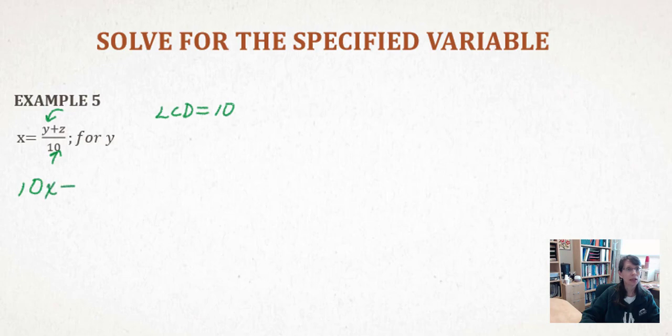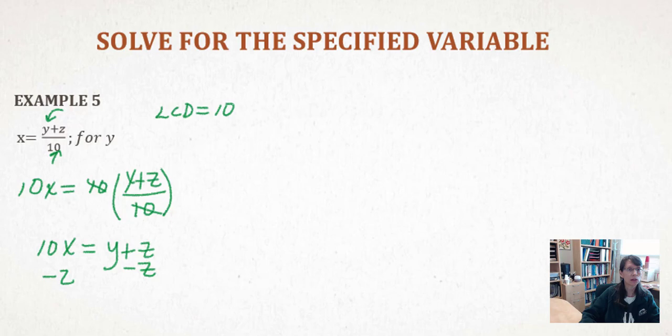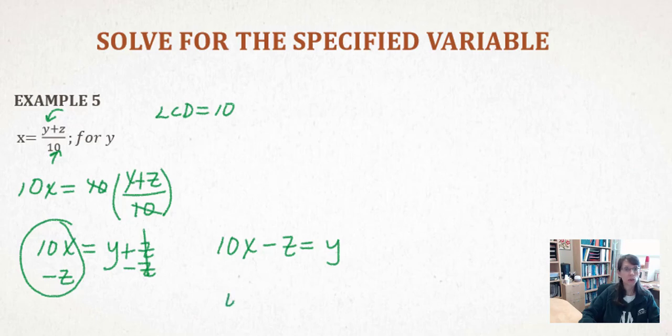10 multiplied by X would equal 10 multiplied by the fraction, which was Y plus C divided by 10. You will notice that 10 divided by 10 eliminates. We are left with 10X now equals Y plus C. To isolate the variable Y, we simply subtract Z from each side of the equation. Z will eliminate from the right hand side and then it collects on the left. We do not have like terms on the left, so the best we could do is to write 10X minus Z equals Y. Now, this equation is equal to Y equals 10X minus Z. Either way you would prefer to write it is acceptable.